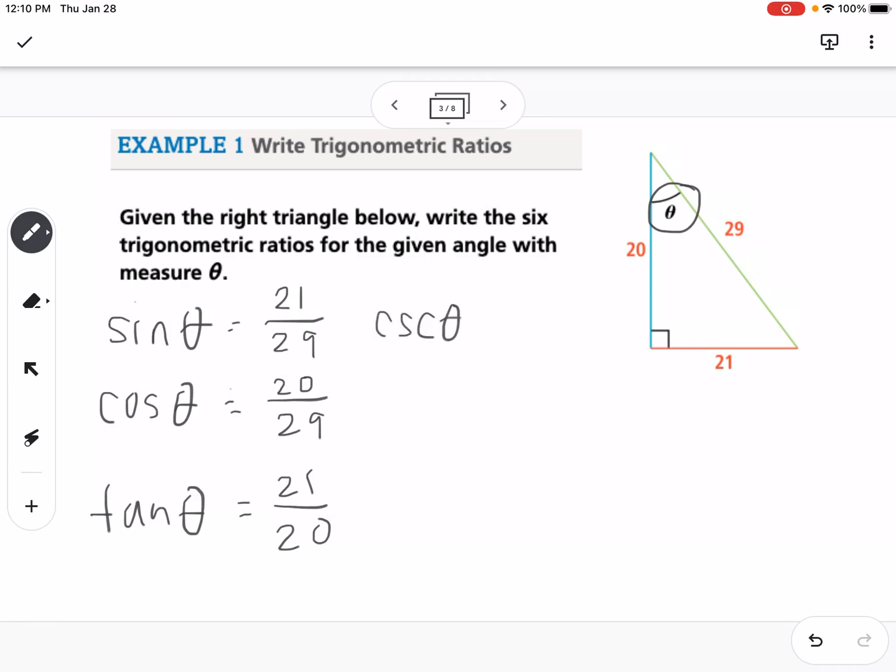Cosecant would be 29 over 21, secant would be 29 over 20, and cotangent would be 20 over 21. I just realized that this is a different triangle than what's on the handwritten notes, so just make note. Now you have two examples, so just be aware those are a little bit different.